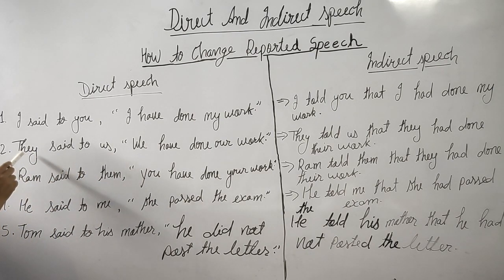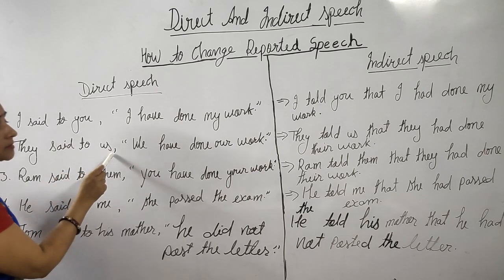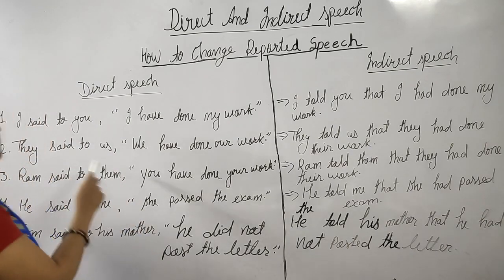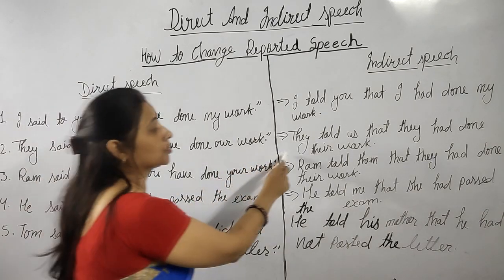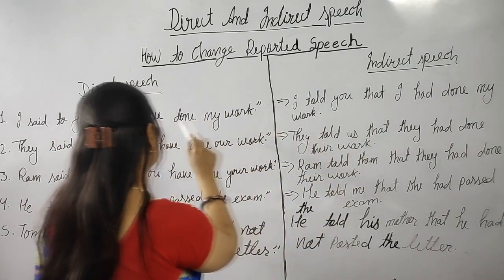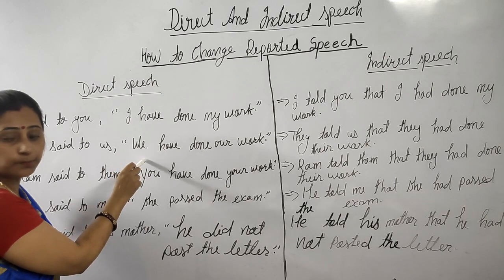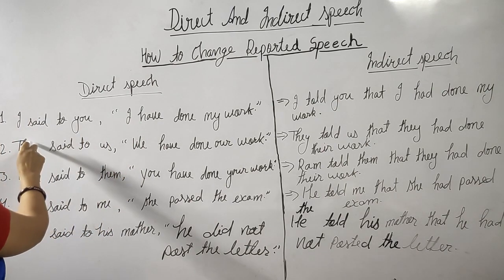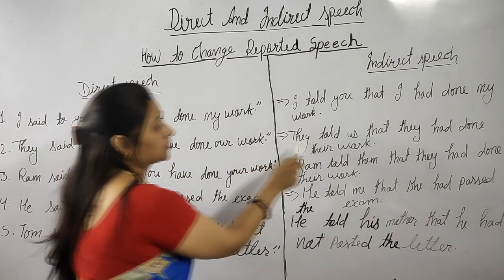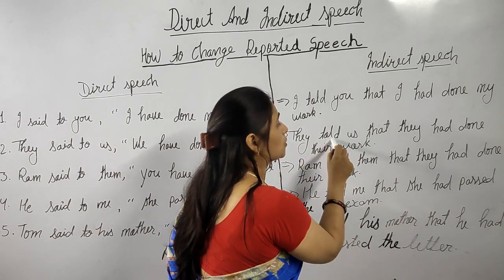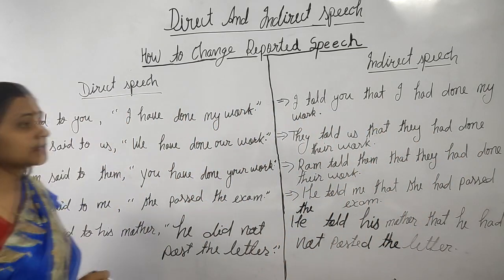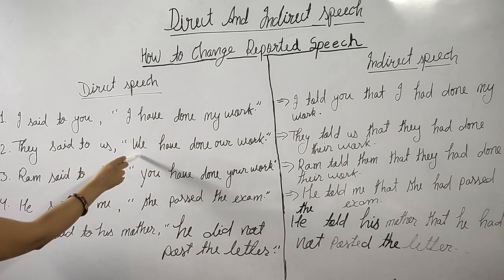Now look at the next example: They said to us, 'We have done our work.' Again 'said to' will be changed into 'told.' They told us that — here 'we' is the first person, so we will change 'we' according to the subject of the reporting word. In that way: they told us that they had done their work.